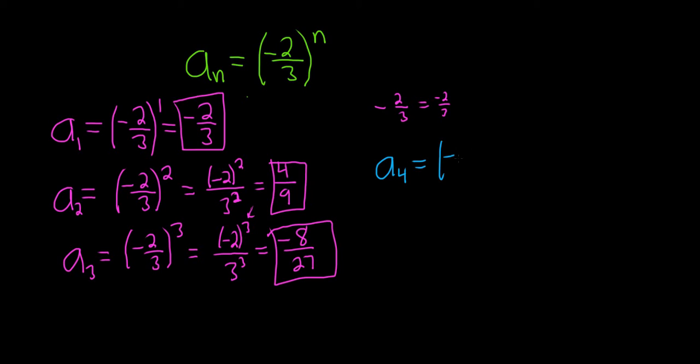In this case, we get negative 2 thirds to the fourth power. Negative 2 to the fourth power is 16, because 2 to the fourth is 16. And 3 to the fourth is 81. If you don't know what 3 to the fourth is, you can use a calculator. Another way to do it is to write it as 3 squared times 3 squared, which is 9 times 9, which is 81. So that would be a_4.